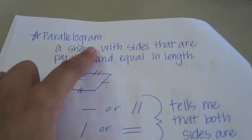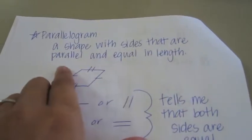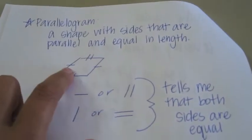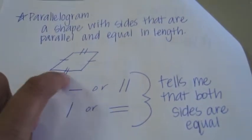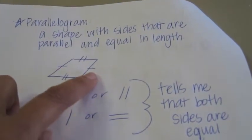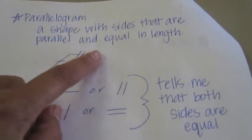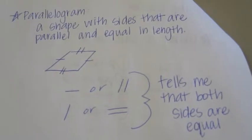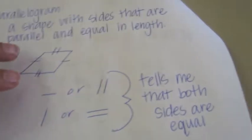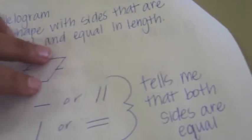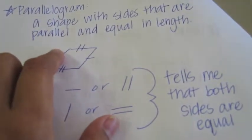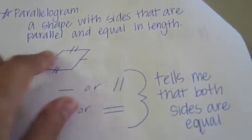This is a parallelogram — a shape with sides that are parallel and equal in length. I know it's a parallelogram because there are picture clues. If you look at these two lines, you see one tick mark here and one tick mark here — that tells me those two lines are parallel. This line has two little lines and this line has two little lines, telling me these two lines are also parallel. When a shape has sides that are parallel and equal in length, it's a parallelogram.